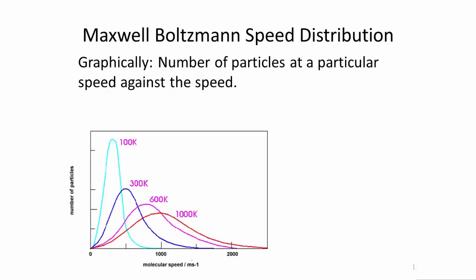If we do a graph of the number of particles at a particular speed against the speed, you get a graph which looks a bit like this. What we can see from this are certain features. Let's list them.